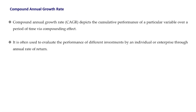Before seeing the questions from exercise 7.5 and learning the formula for compound annual growth rate, we will see what it actually is. Compound annual growth rate depicts the cumulative performance of a particular variable over a period of time using the compounding effect. It is often used to evaluate the performance of different investments by an individual or enterprise, which is calculated using the annual rate of return.